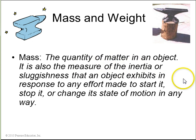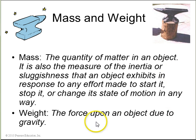Mass is the quantity of matter in an object. It also measures the inertia or sluggishness that an object exhibits in response to any effort made to start it, stop it, or change its state of motion in any way. And weight is the force upon an object due to gravity.